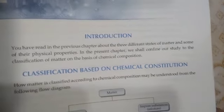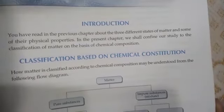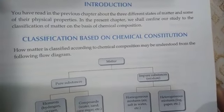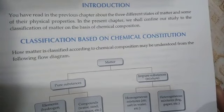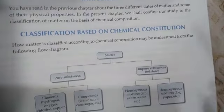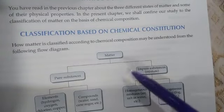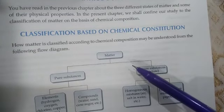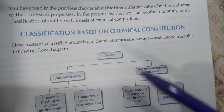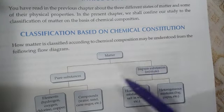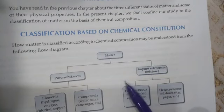You can see this table. How matter is classified according to chemical composition may be understood from the following flow diagram. Matter are of two types: pure substances and impure substances.